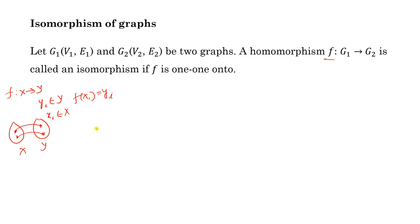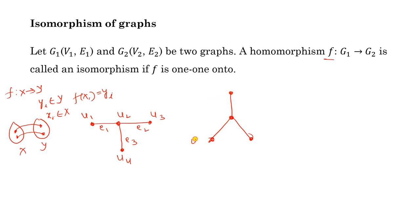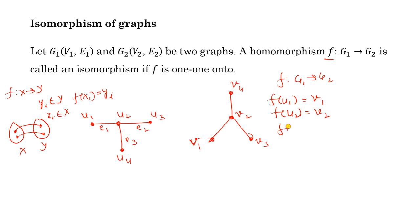Now look at this example. Suppose we have a graph with vertices u1, u2, u3, u4 and edges e1, e2, e3. Consider another graph with vertices v1, v2, v3, v4. We define a mapping f as: f(u1) = v1, f(u2) = v2, f(u3) = v3, f(u4) = v4.